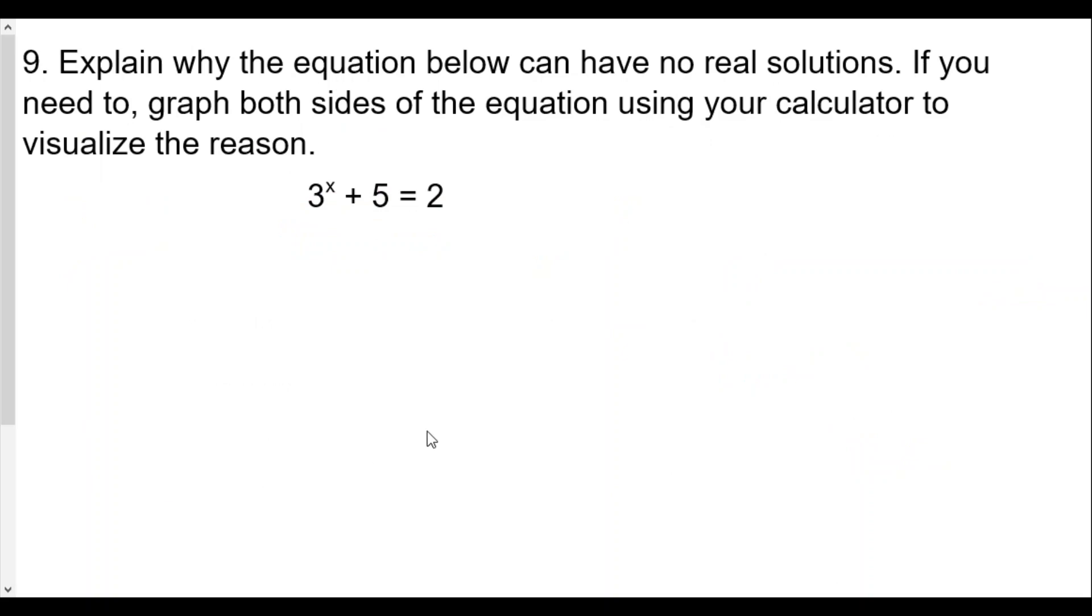Question number 9: explain why the equation below can have no real solutions. If you need to, graph both sides of the equation using your calculator to visualize the reasoning. One thing we know is that 3 to the x has to be greater than zero no matter what value we have. Therefore, if we have a number greater than zero plus 5, it has to be greater than 5.